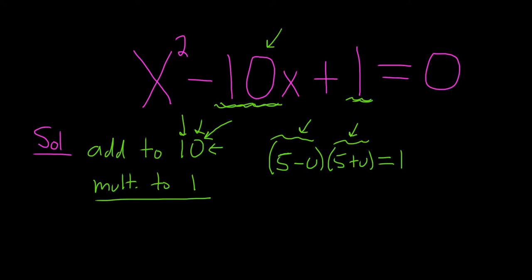Now you can use the difference of squares formula. So 5 squared minus u squared. So 25 minus u squared. And that's equal to 1. This is a minus b, and this is a plus b. And that's going to give you a squared minus b squared. Subtract the 25. So you get negative u squared. 1 minus 25 is negative 24. Yeah, subtract 25. Divide by negative 1.